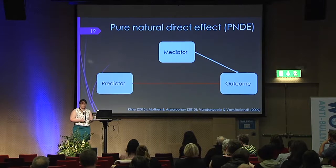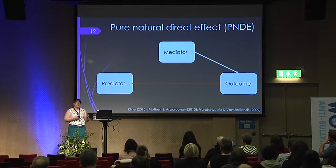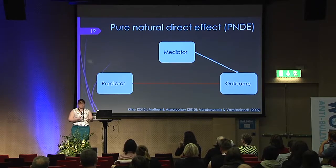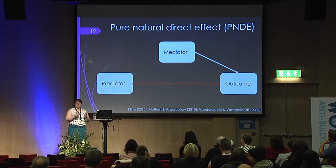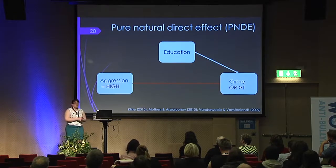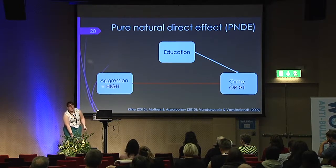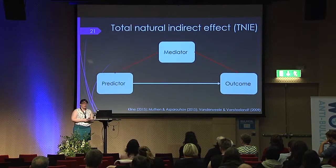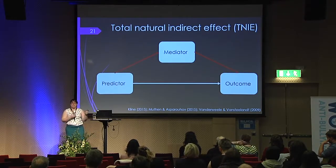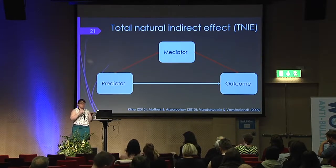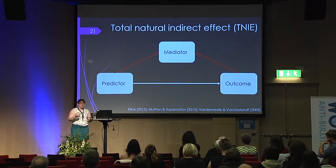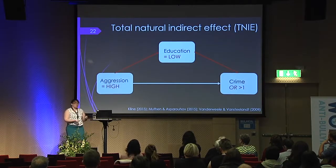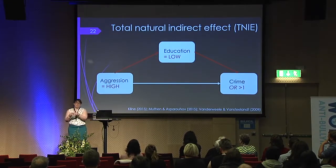There are two effects that we get. One is the direct effect — essentially the effect from the predictor to the outcome as if there was no path to the mediator. Using my variables, if I have high aggression, I would expect an odds ratio greater than one for criminal offending across any of the three charges. Then there's the indirect or mediation effect, which acts similarly to normal product mediation but maintains the binary nature. If I have highly aggressive children, I would expect lower education, which in turn predicts an odds ratio greater than one.